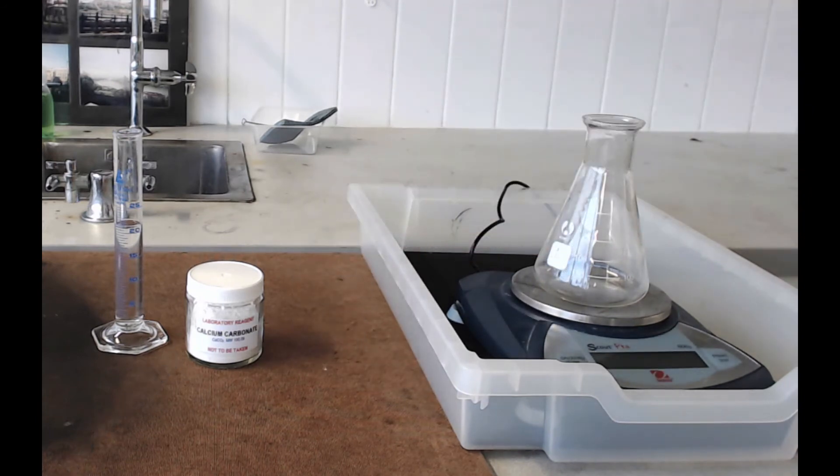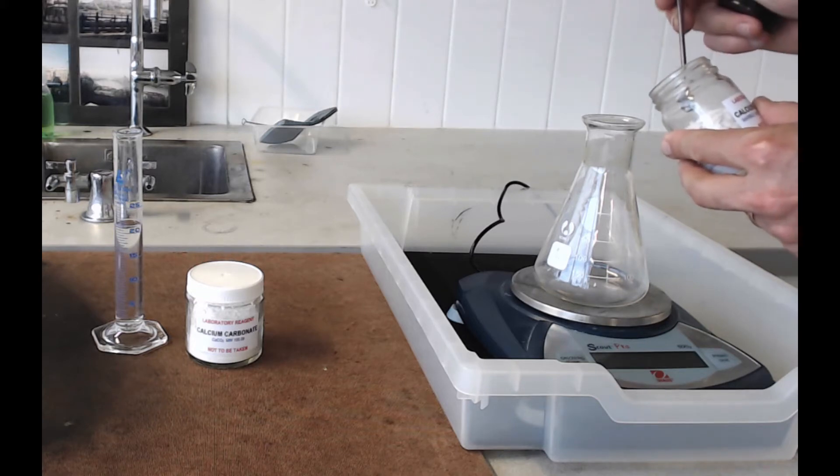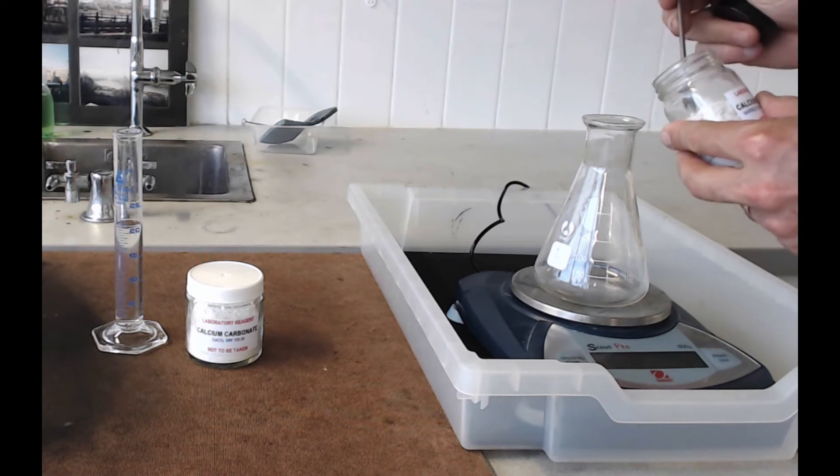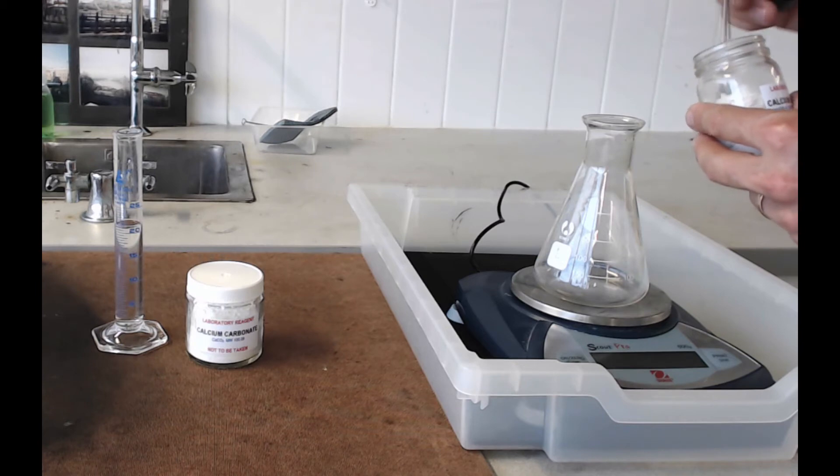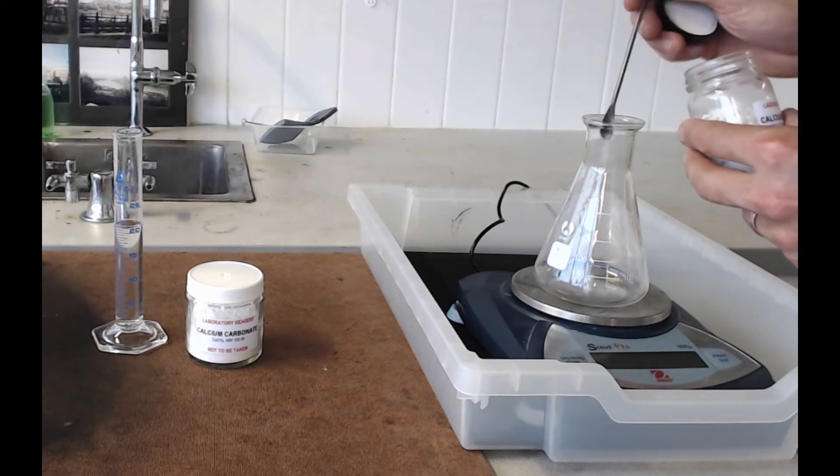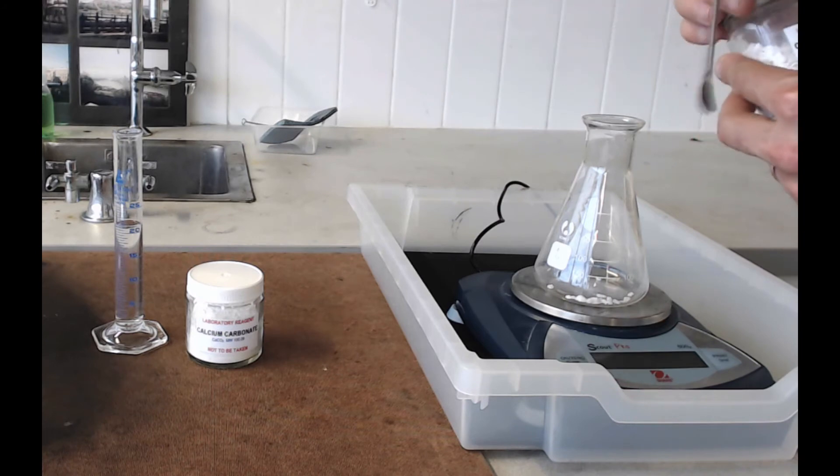As always, it's a good idea to keep things from spilling onto the balance. When you're weighing these things out, keep your jar close to the mouth of your flask - that way it's much harder to have a spill. Put two grams, or as close as you can to two grams, into your conical flask.